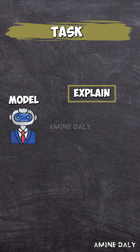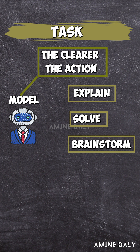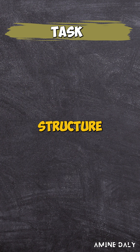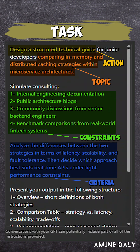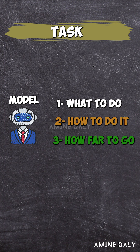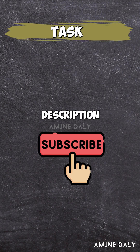Do you want the model to explain, solve, brainstorm? The clearer the action, the sharper the result. This structure gives the model clarity, boundaries, and intent, so it knows exactly what to do, how to do it, and how far to go. More details are in the description.